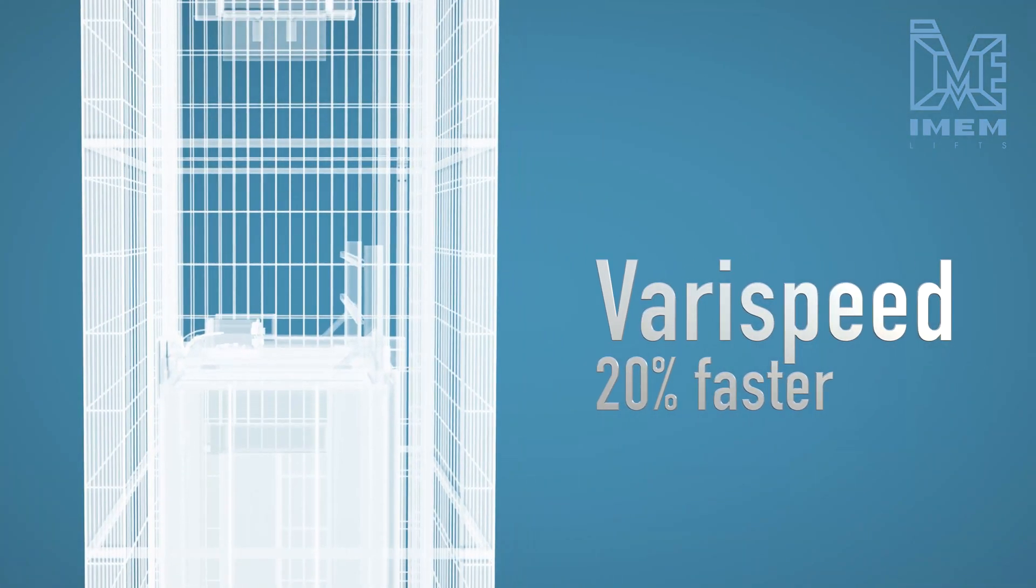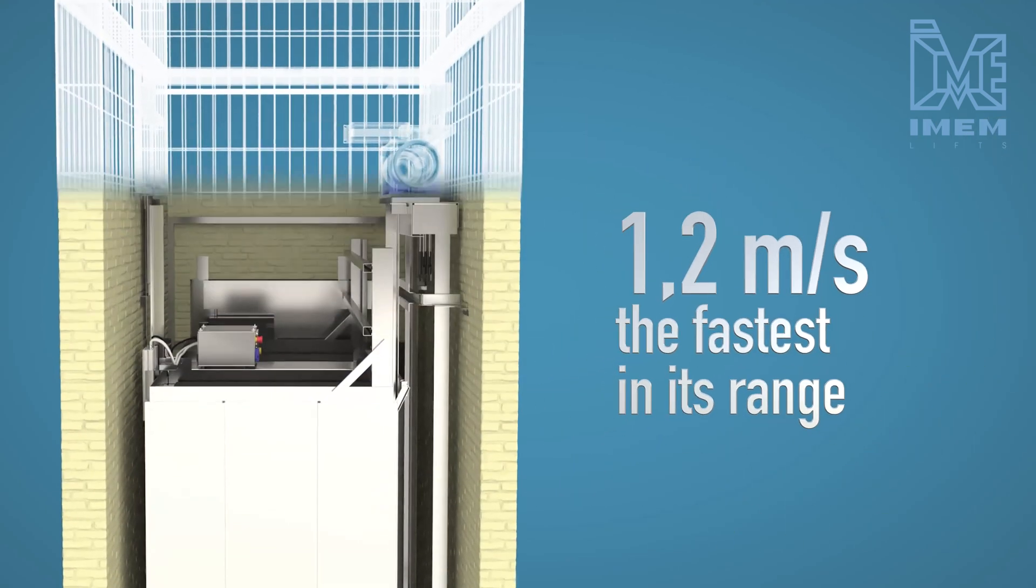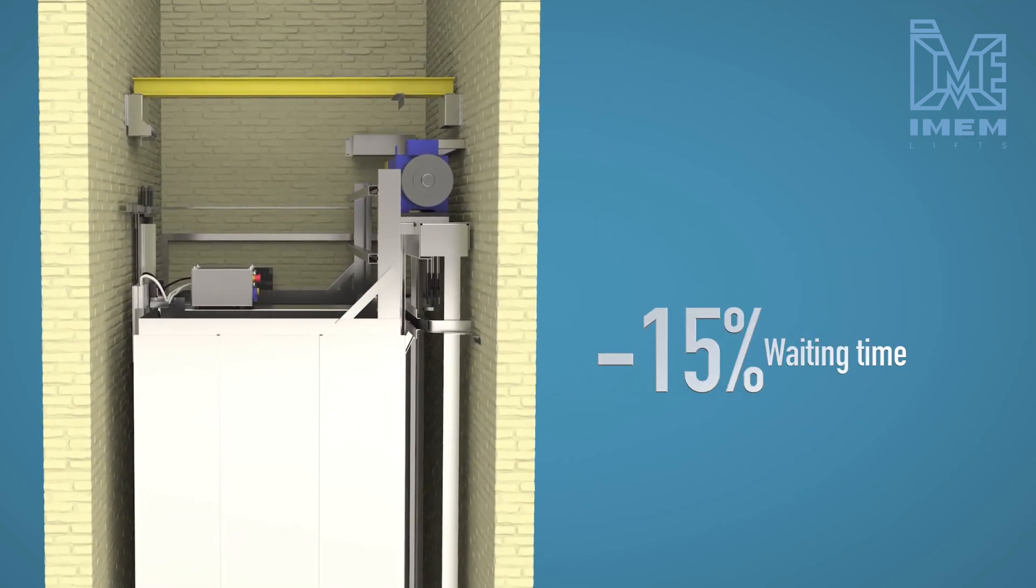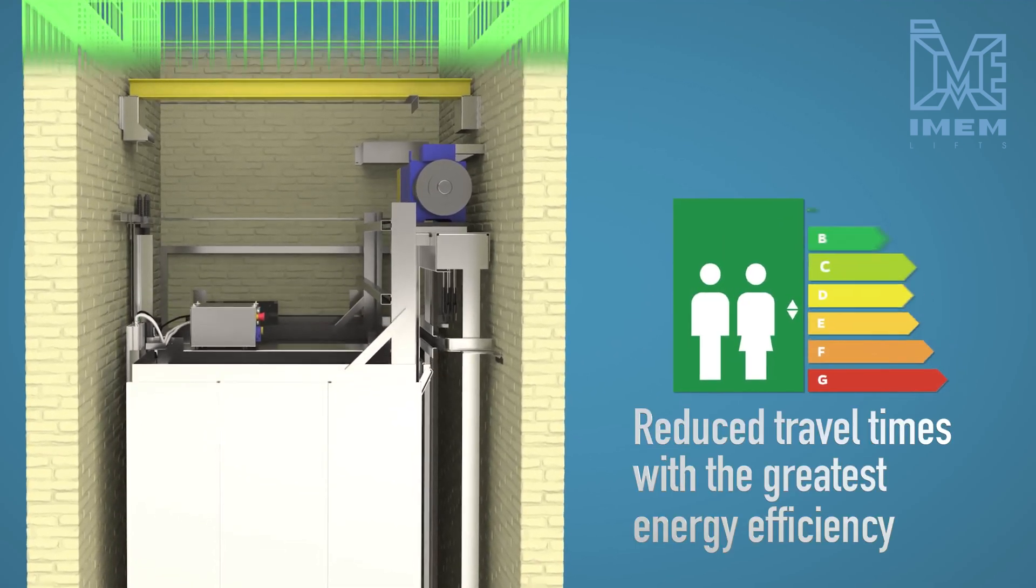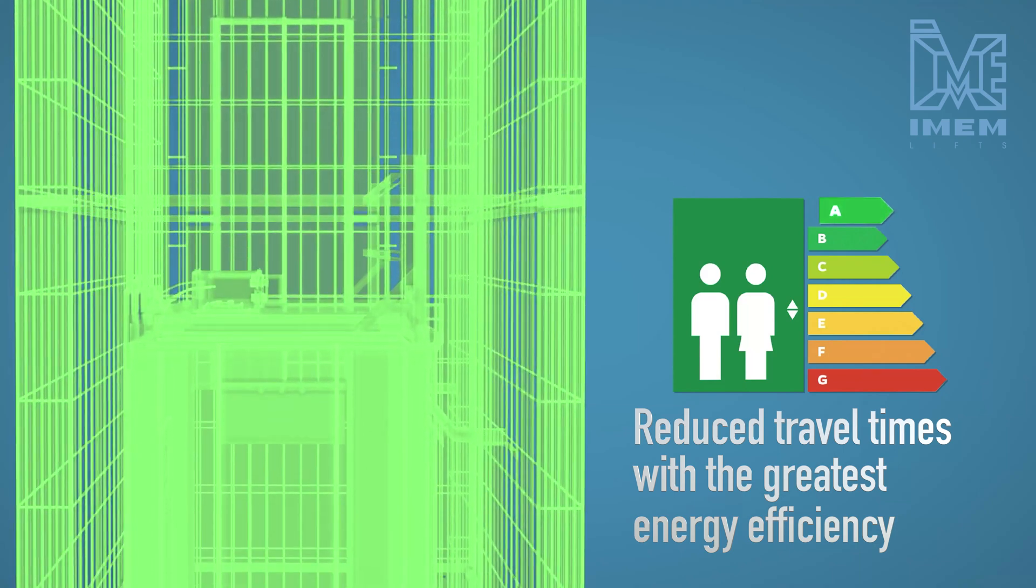The Silence Pro Revolution is the first lift on the market capable of intelligently increasing its speed, whilst also reducing travel and waiting times, without renouncing the highest level of energy efficiency for lifts of its class.